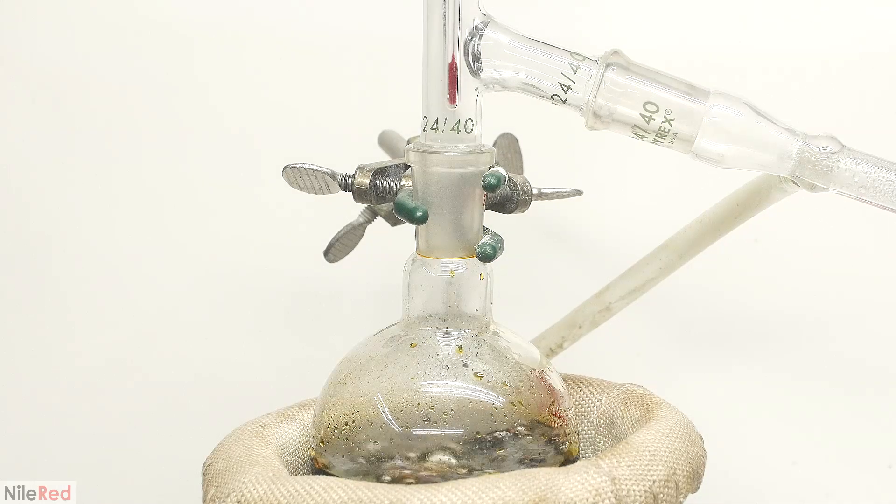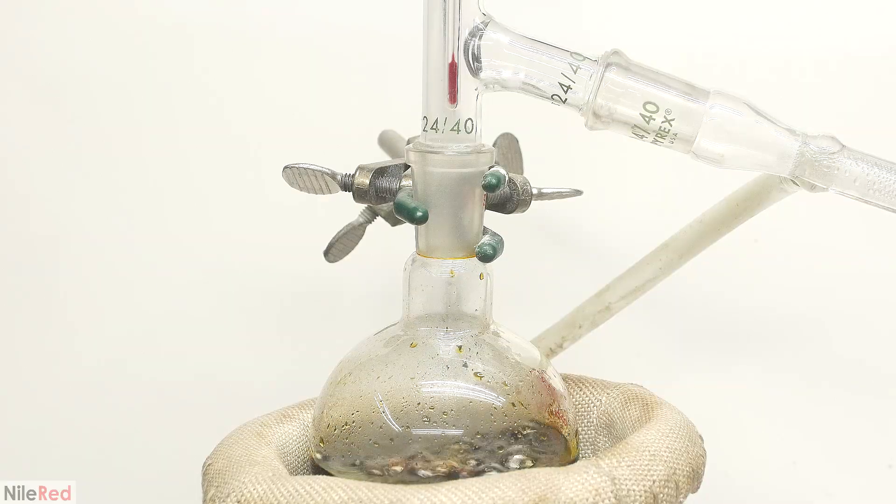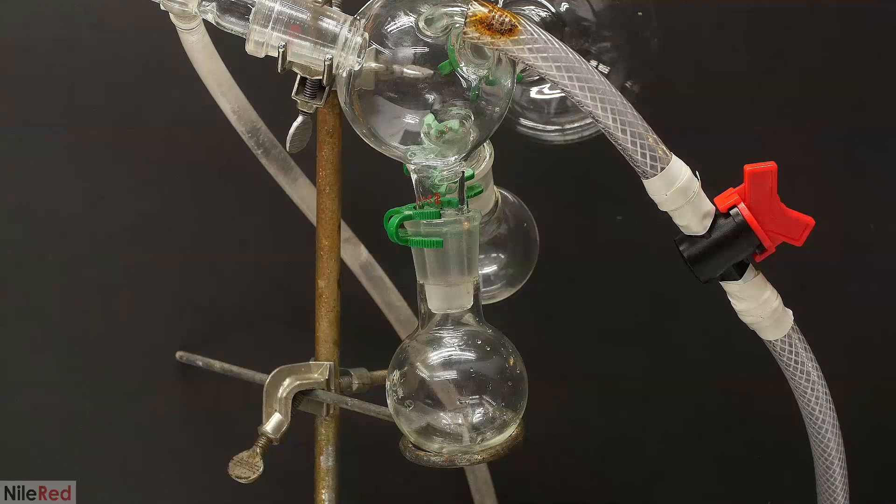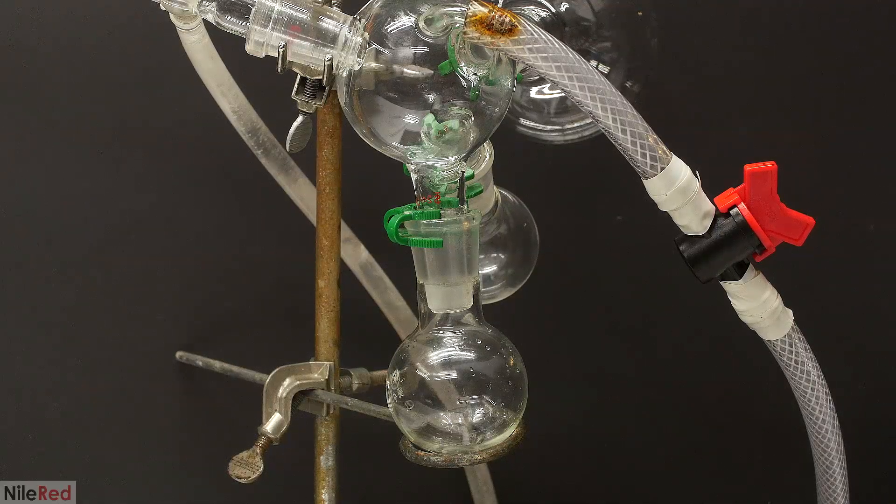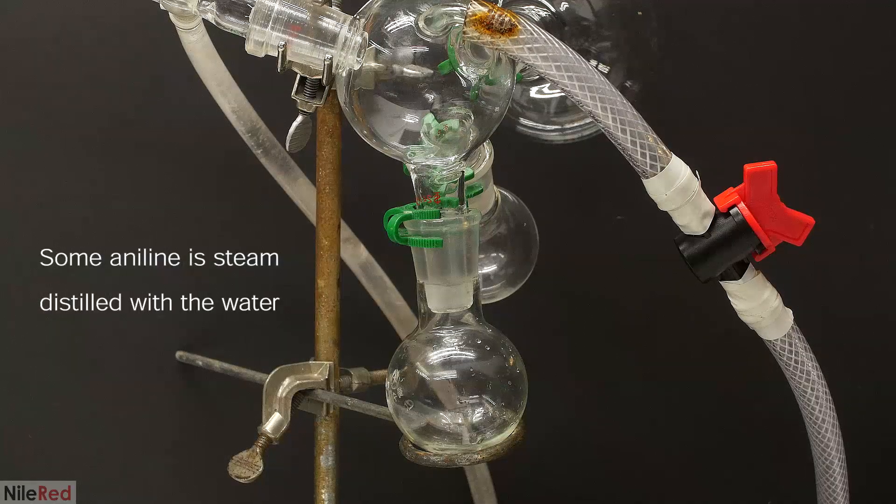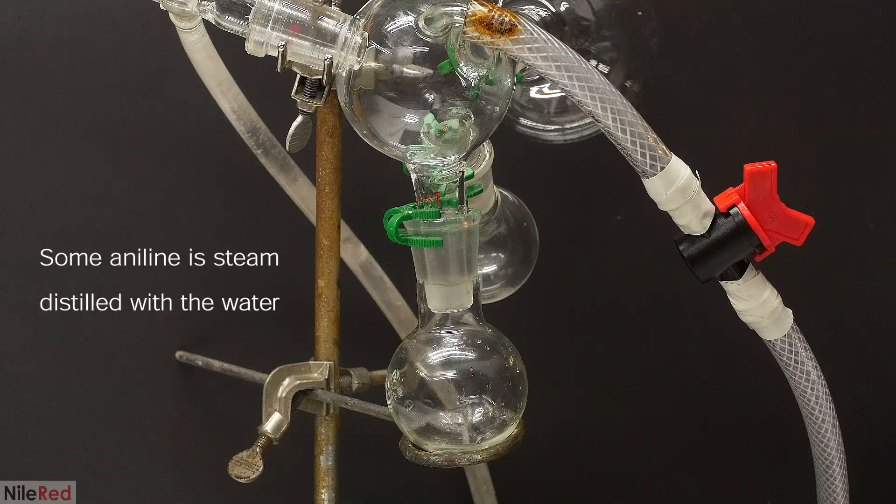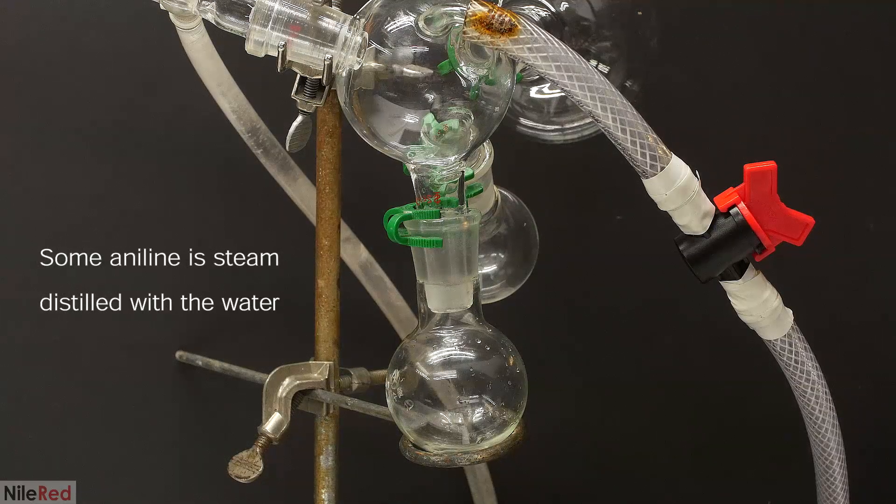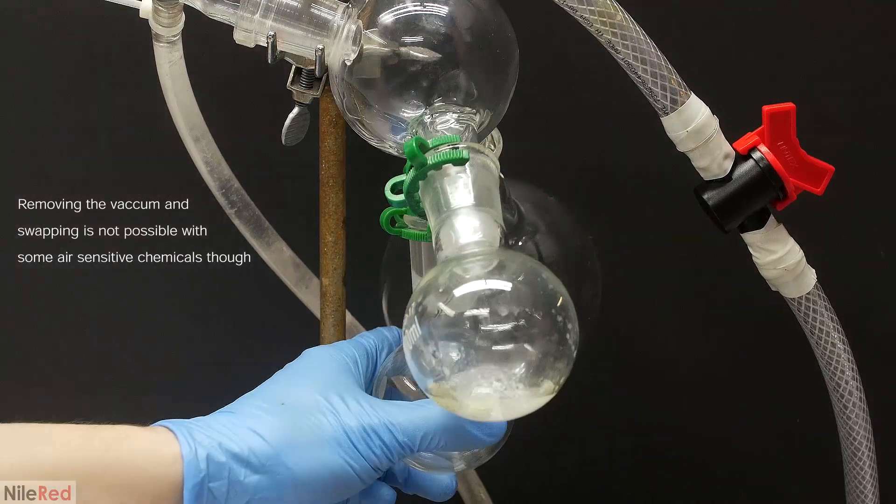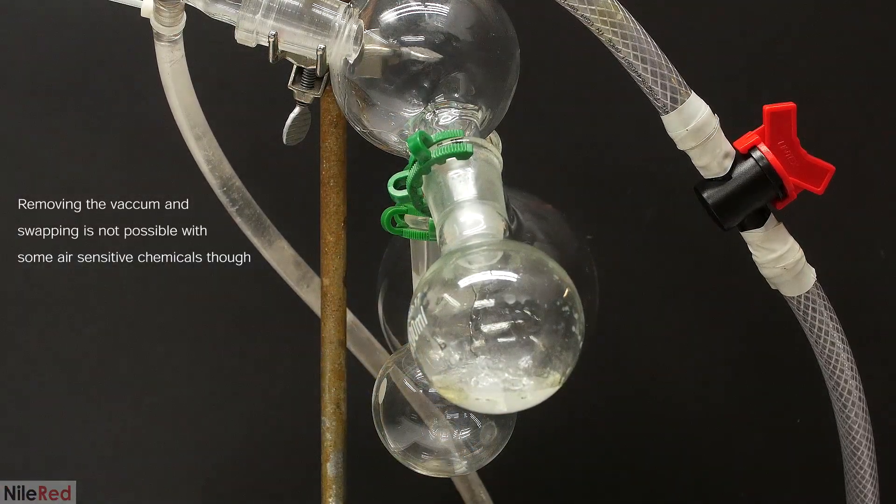I turn on the heating in the vacuum, and the first thing to come off is going to just be water. When we take a look at the other end of the distillation setup, you can see that I'm using my three-way cow adapter. In the beginning, I'm just collecting water, but at some point when the aniline starts to come over, I need to swap out the receiving flask.